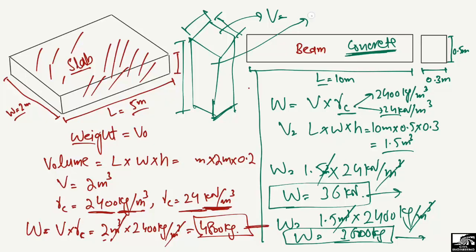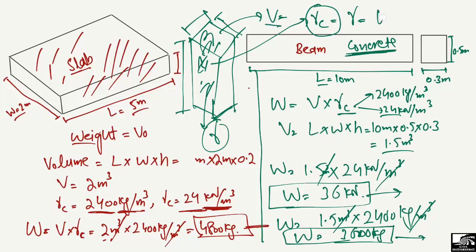Then you need the density of the material used to construct the column. If it is a concrete column, we use gamma-c. If it is steel-reinforced concrete, the density is different; if aluminum or another material is used inside, we use the corresponding unit weight from standards. We simply multiply volume by density to get the weight of any structural member. Hope you guys understood — don't forget to subscribe to our channel for daily civil engineering videos. Thank you for watching.